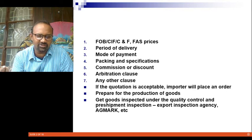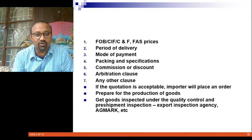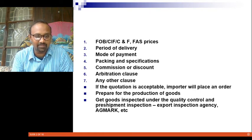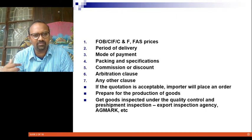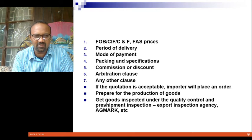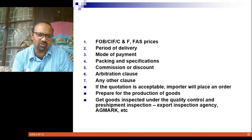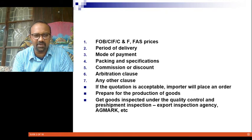The sample allows the importer to not just go through the details but also check the quality of the good. If the quotation is acceptable, the importer will place an order. Once the order is placed, you start manufacturing the goods and preparing them for export. Once your goods are ready, you send them for quality control and inspection. Once quality checks are done, the quality agency will fix a mark — ISI or, if it is an agricultural commodity, an Agmark — to ensure the good is fit for consumption.